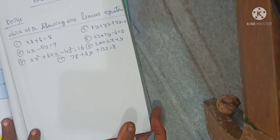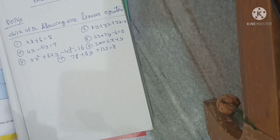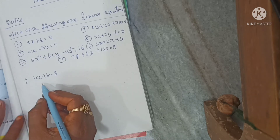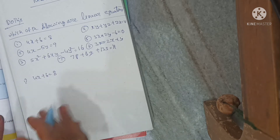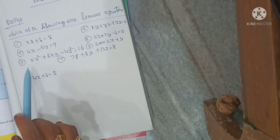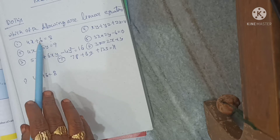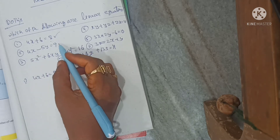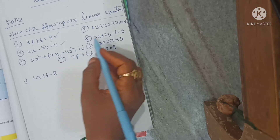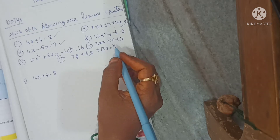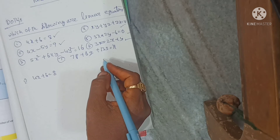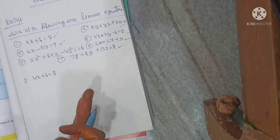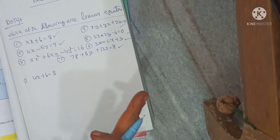Now, which one is the linear equation? First one: 4x plus 6 is equal to 8. Linear equation means the degree of each equation must be 1. First one, second one, fourth one, fifth one, sixth one, and seventh one — the degree of each equation is 1, so these are called linear equations.